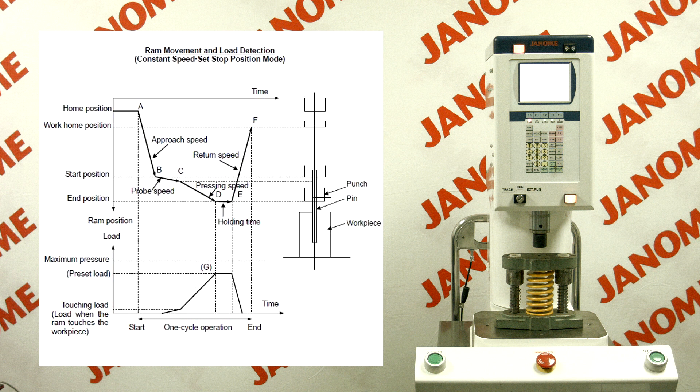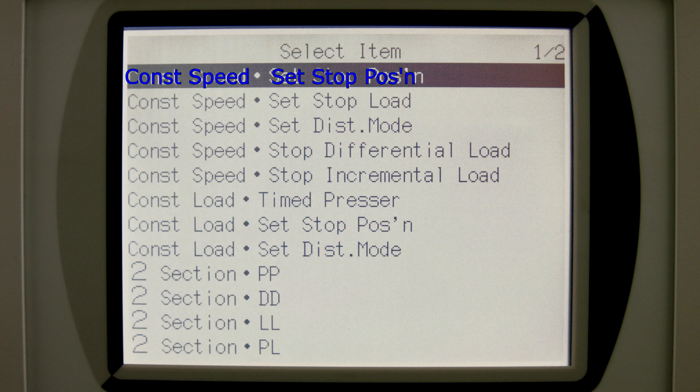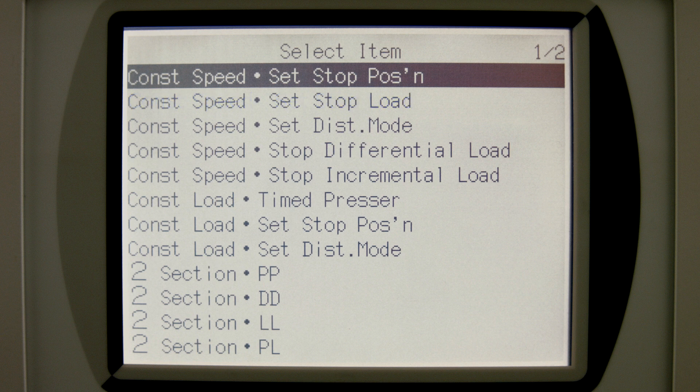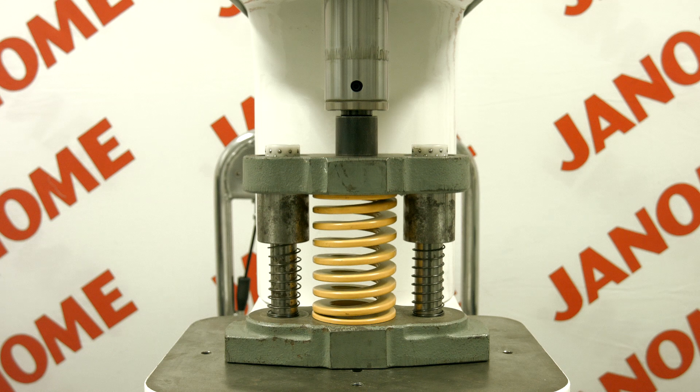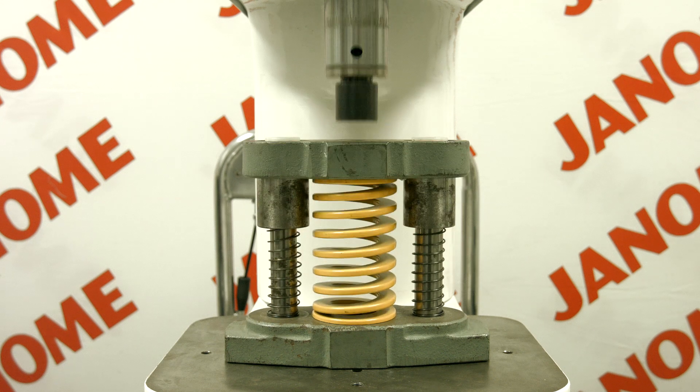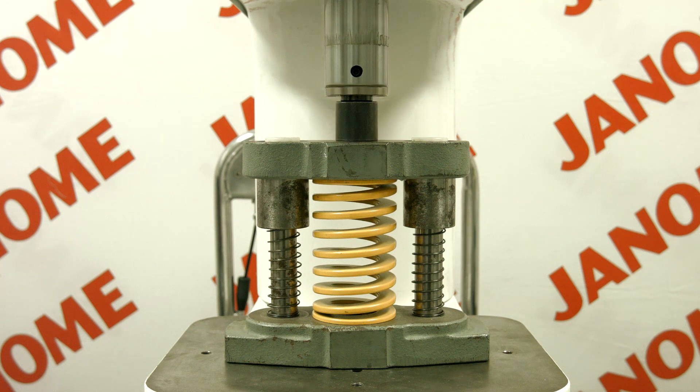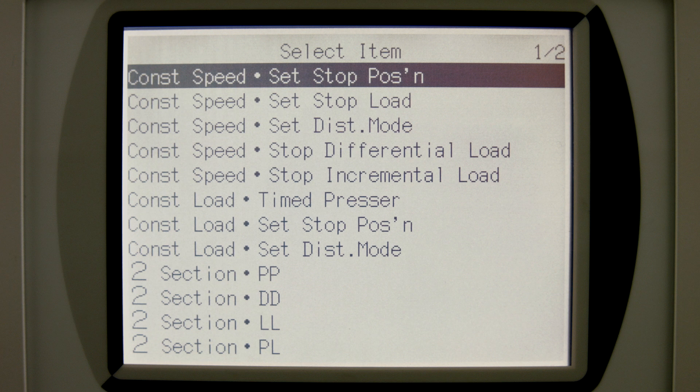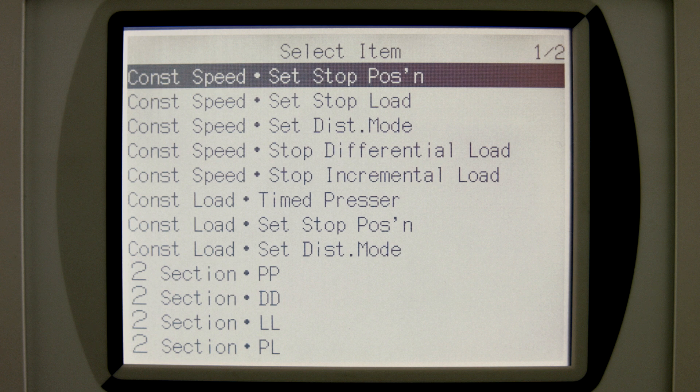The next cycle will be started from the work home position. The operation mode constant speed set-stop position is effective for pressing the workpiece to a set position. The constant speed set-stop load is useful for thrust fitting. In this mode, the RAM will stop at the position where it has detected the preset load instead of the end position. Other movements are the same as those in the constant speed set-stop position mode. A variety of operation modes are available. Use the mode that suits your requirements. The next section will cover program teaching methods.